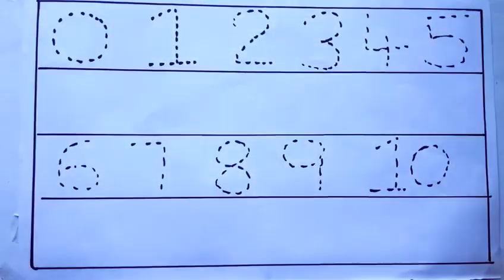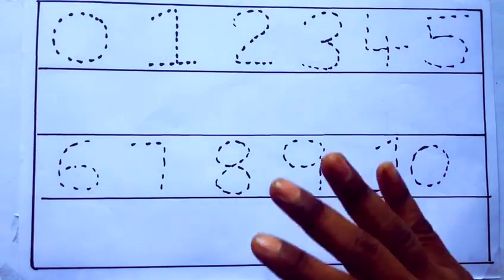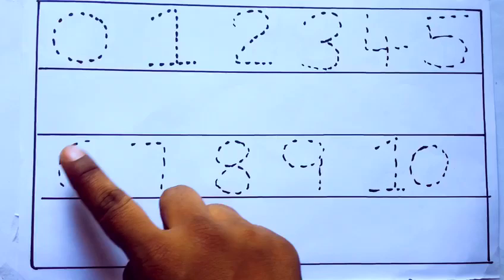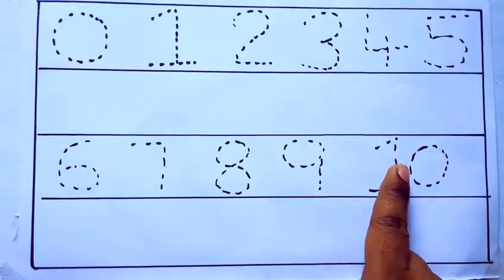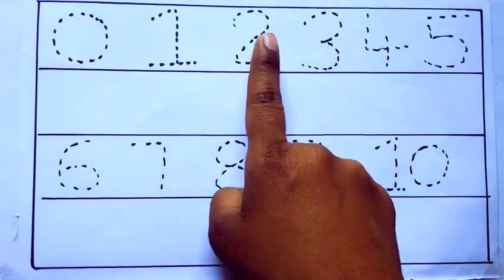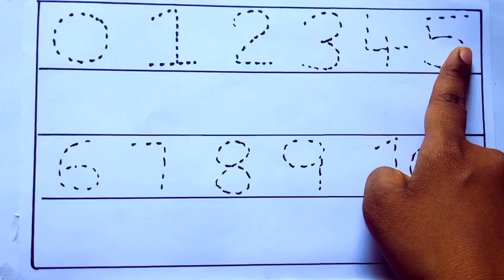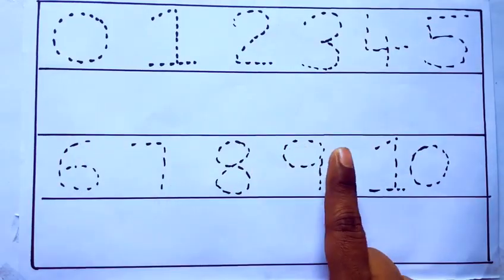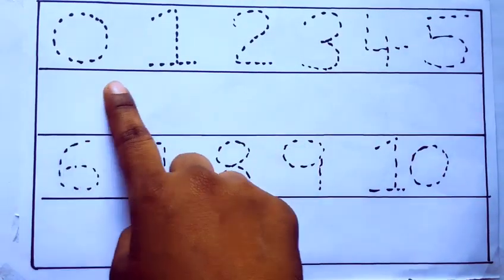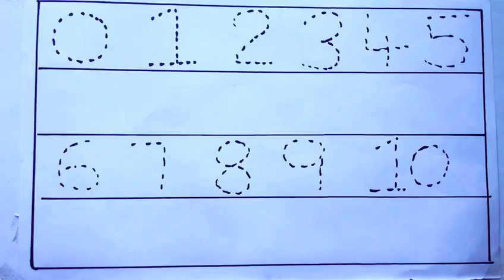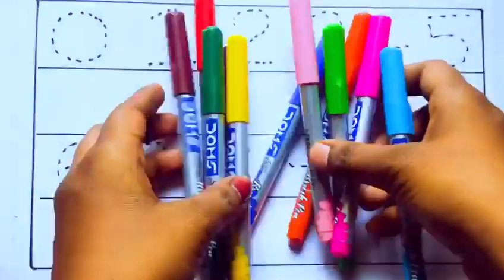Hello kids, how are you? Welcome to our channel. Today we are going to learn numbers 0 to 10. Zero, one, two, three, four, five, six, seven, eight, nine, ten, and rewriting the numbers. Let's learn some colors. These are all the color pencils.